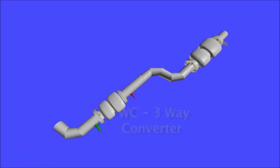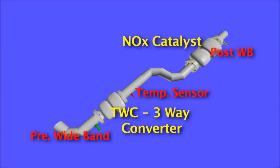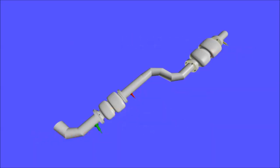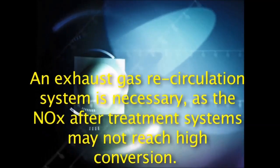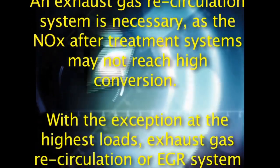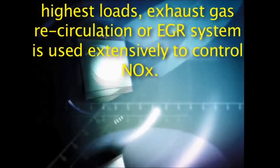Two catalytic converters are successively used in GDI engine exhaust systems: a three-way converter with little volume connected close to the exhaust manifold, also called a baby converter; and the main catalytic converter which is a NOx catalyst with higher volume, connected further away from the engine. An exhaust gas recirculation system is necessary, as the NOx after-treatment systems may not reach high conversion. With the exception of the highest loads, EGR is used extensively to control NOx.